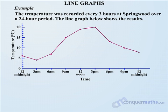Notice the horizontal axis is the time axis. Generally when a graph involves time it will be along the horizontal axis, and in this case the vertical axis measures the temperature in degrees Celsius.